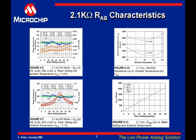The wiper resistance increases as the voltage delta between the resistor network node and the voltage on the analog MUX switches becomes small, so that the switch is not fully turned on. The wiper resistance curve would look different if terminal A was at VDD/2 while terminal B was at VSS — in this case, the higher wiper codes would have the higher wiper resistance.